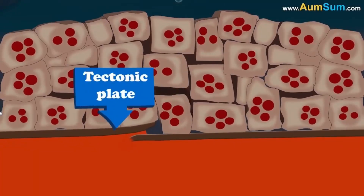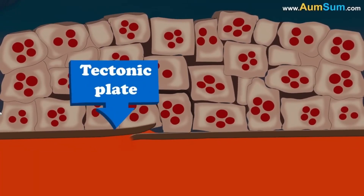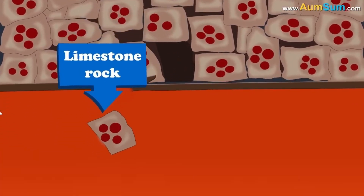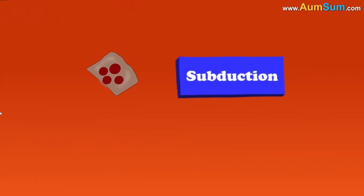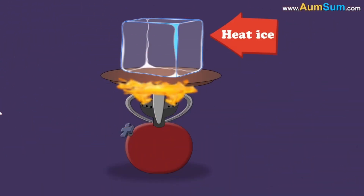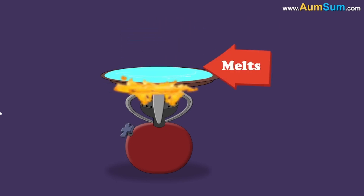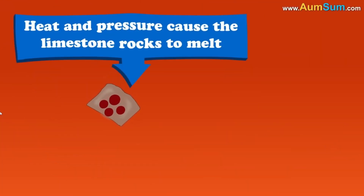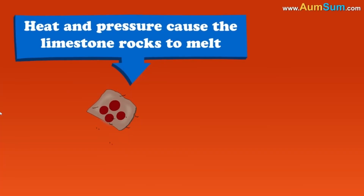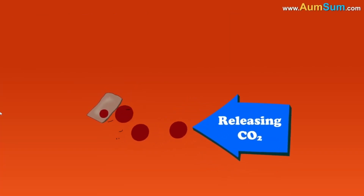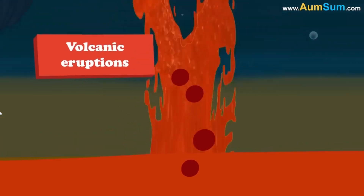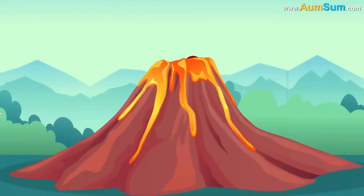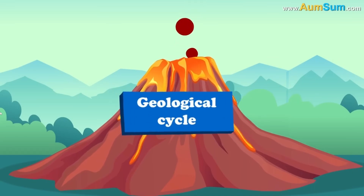When one tectonic plate of the earth moves beneath another, the limestone rocks are pushed deeper into the earth — a process called subduction. Within the earth, heat and pressure cause the limestone rocks to melt, releasing carbon dioxide from the rocks. Through volcanic eruptions, this carbon dioxide is released back into the atmosphere, completing the geological cycle.